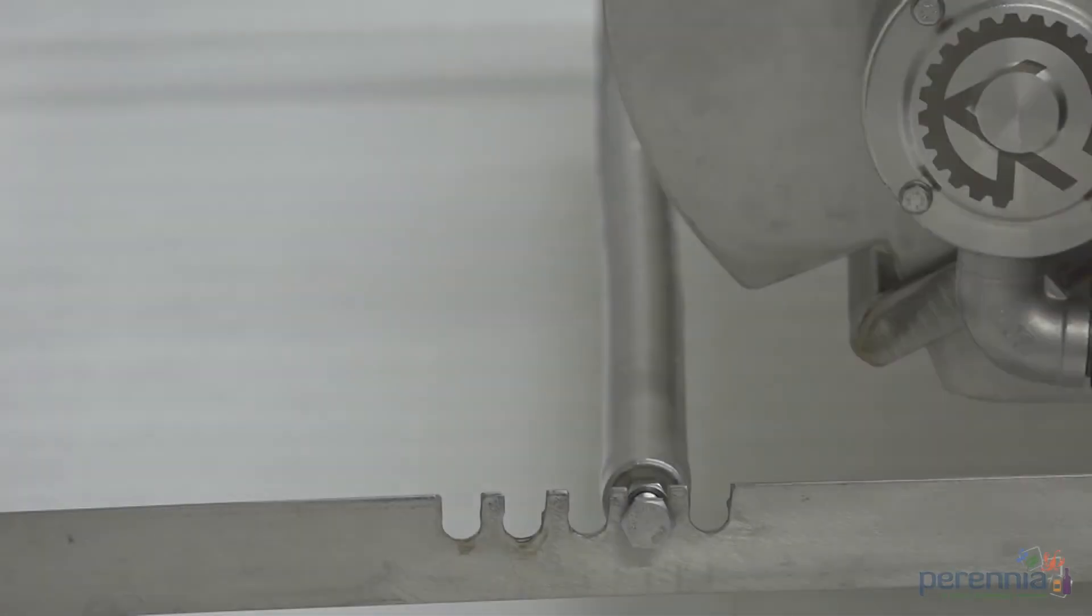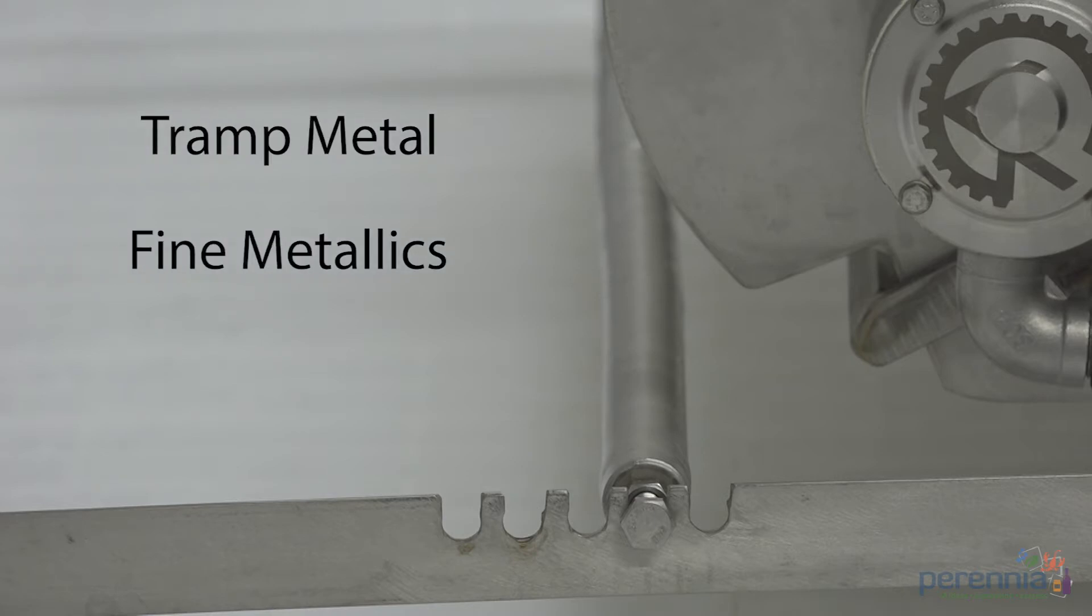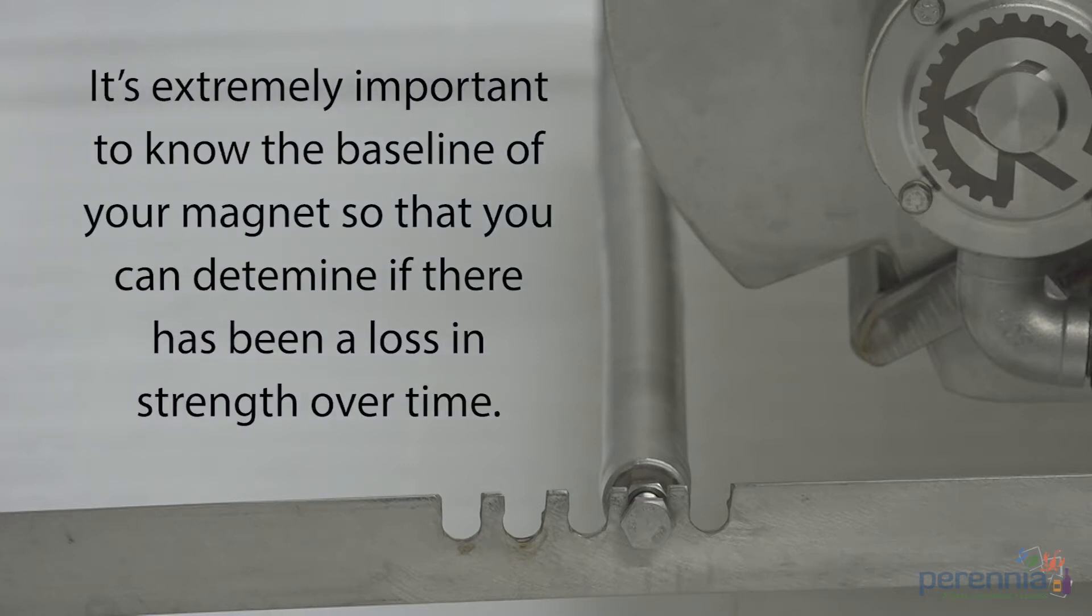Magnets are used for removal of tramp metal or fine metallics. These particles can be introduced at any stage of food processing, either from equipment or even from incoming materials. Over time, magnets can become damaged or lose strength.